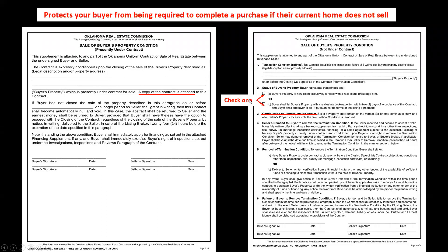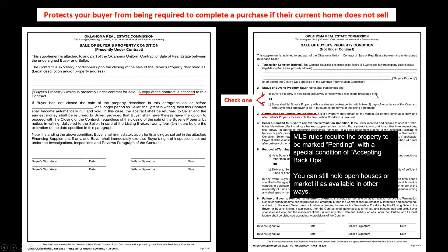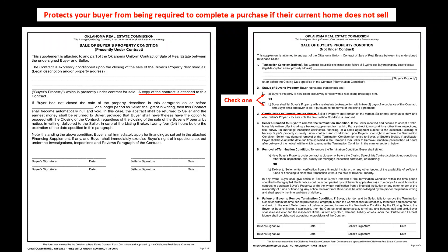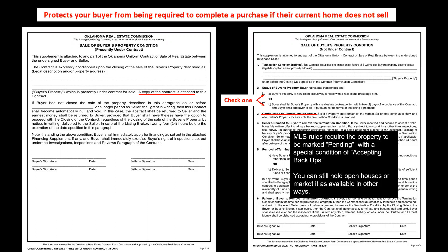On that document, choose whether the property is already listed but not yet under contract, or whether they are going to put it on the market — in which case they have two days to do so. Keep in mind that paragraph three allows the seller to continue marketing the property to attract buyers without a house to sell, since the buyer's home is not yet under contract. Once the buyer's home sells, this contingency no longer applies. Note that under new MLS rules, the property must be marked 'pending with a special condition of accepting backups' even while continuing to be marketed.